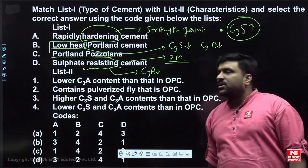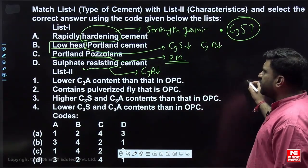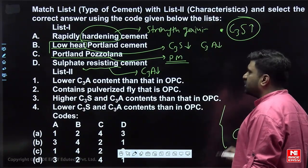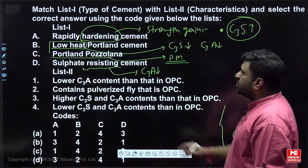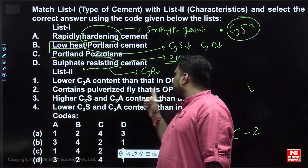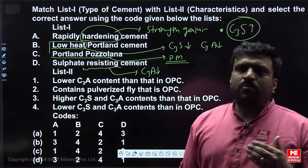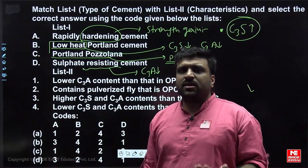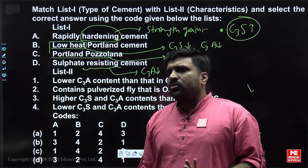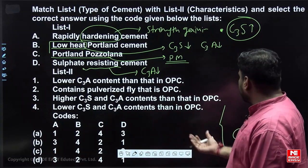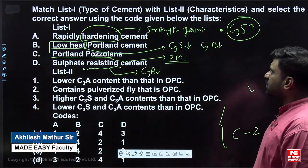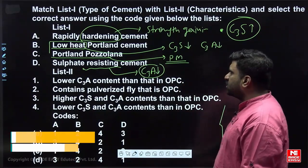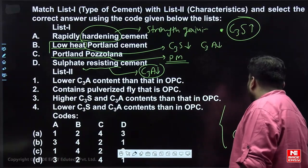Now we can match the answers. For C, which is Portland pozzolanic cement, the answer is 2, because pozzolanic cement contains pulverized fly ash compared to OPC. Other pozzolanic materials include GBFS, silica fume, and surkhi, but fly ash is the most common. So C matches to 2. For sulphate resisting cement (D), C3A must be less than OPC, so D matches to 1.